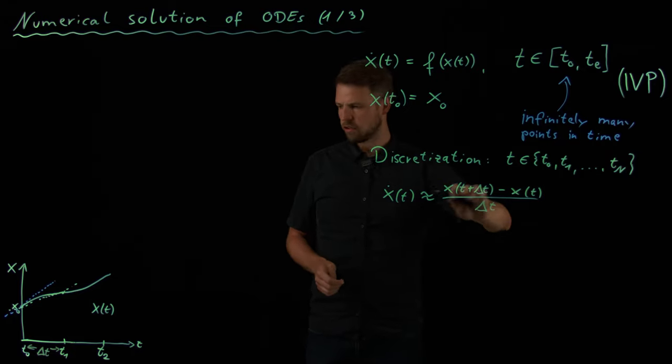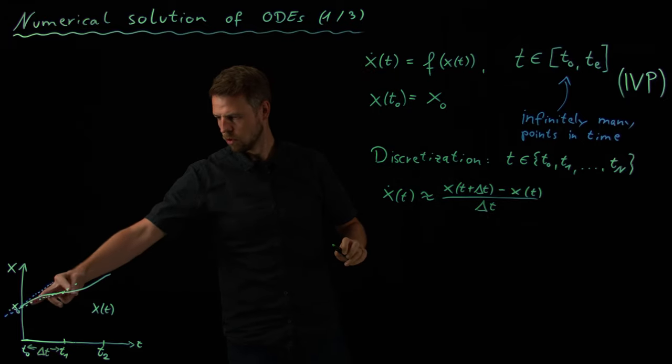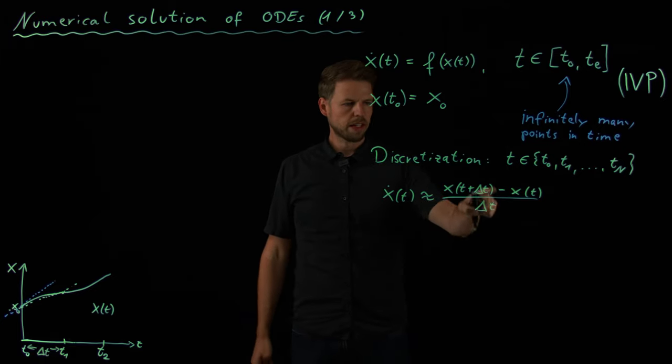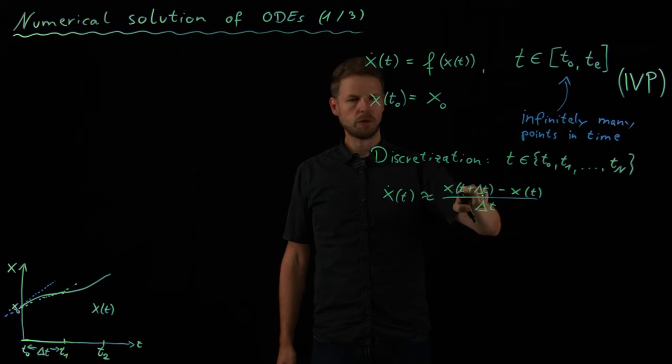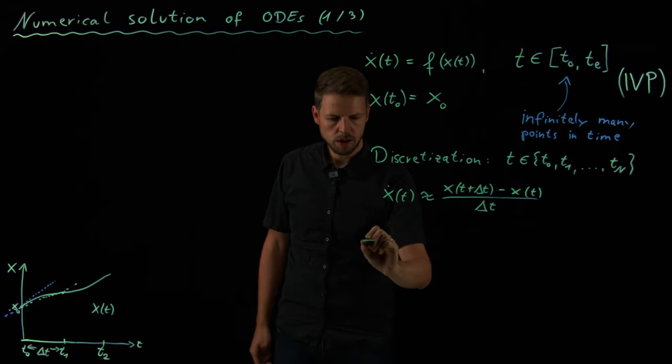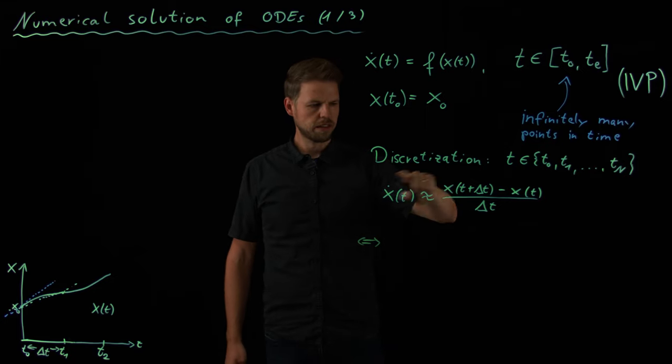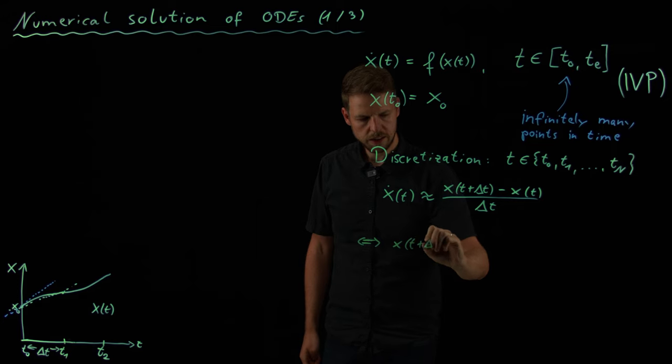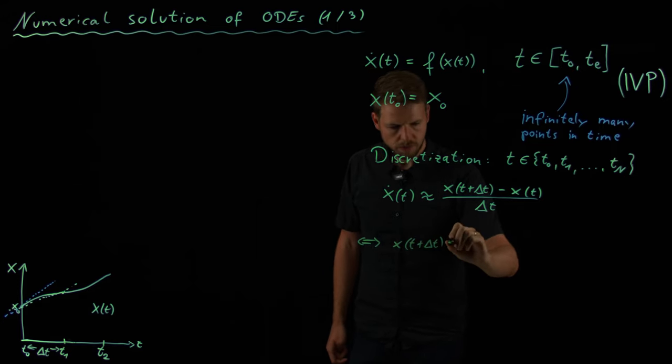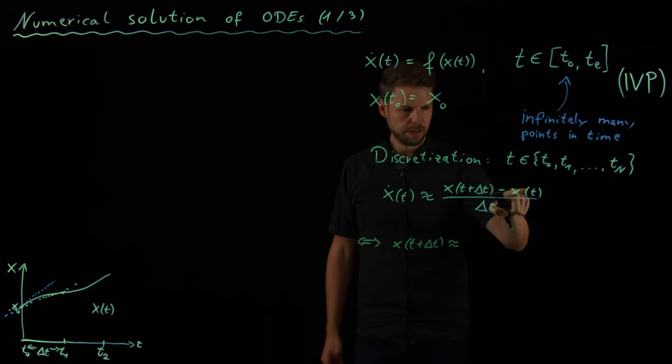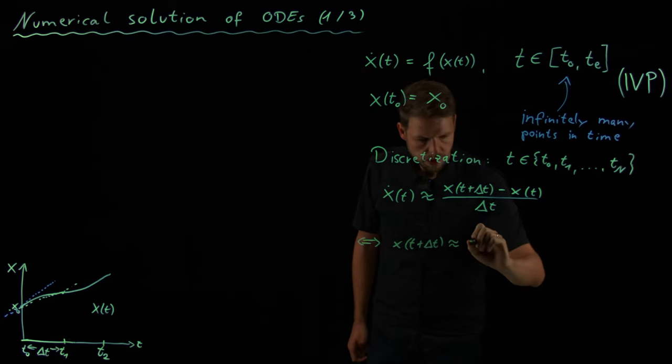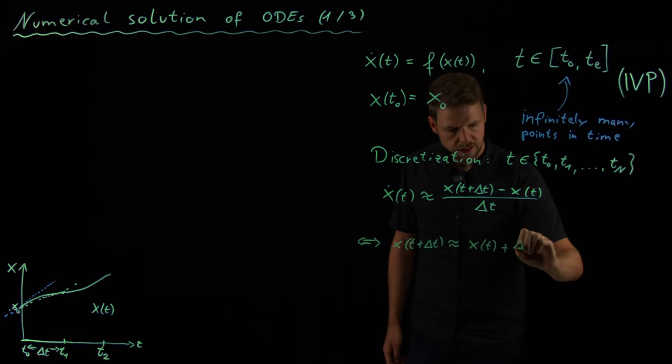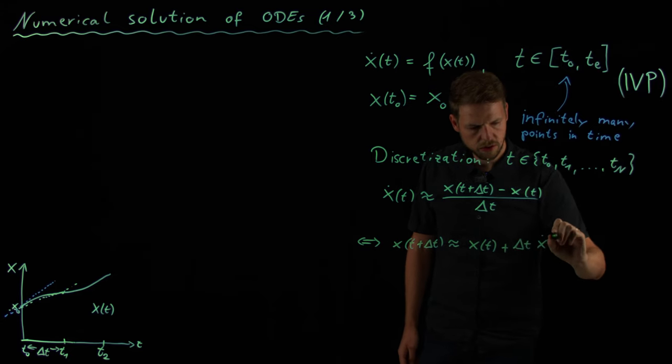Okay, now we see that this is precisely this rule through these two points. We have this approximation and what I can do now, I can simply reformulate this in order to get an update rule for the next time step. So let's just put the x t plus delta t to the left hand side which means that we get x of t plus delta t becomes, or is approximately, x of t. If I put this to the other side, plus delta t times this x dot of t. So all I've done is shift around the terms.